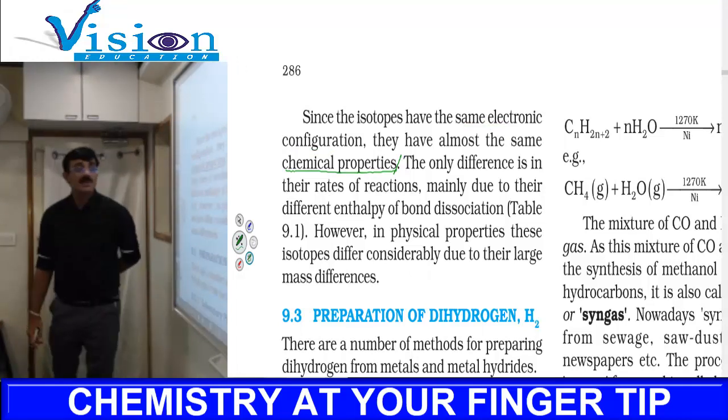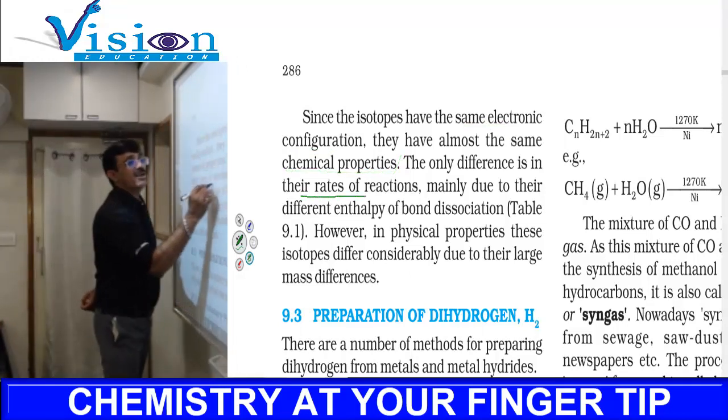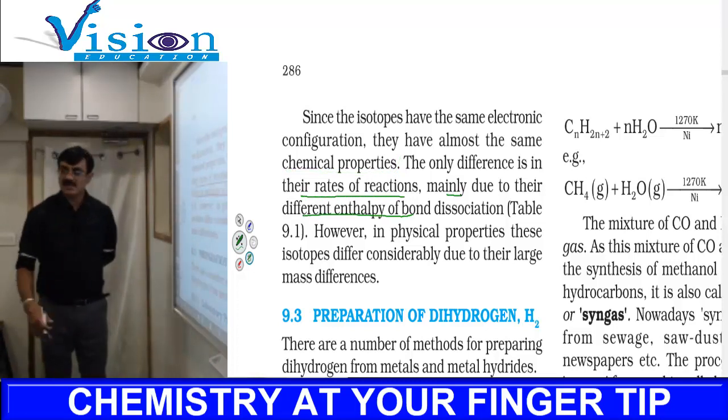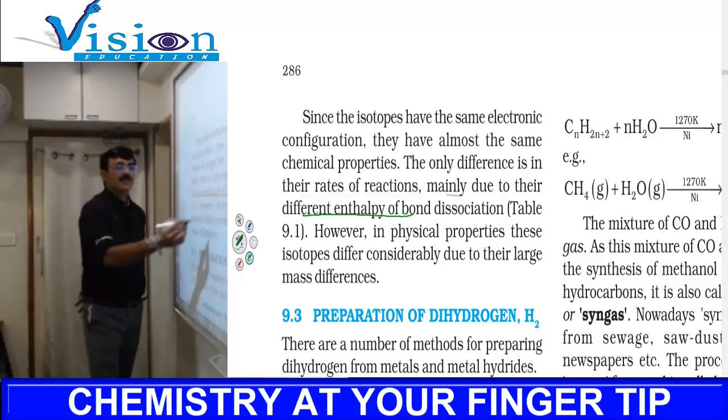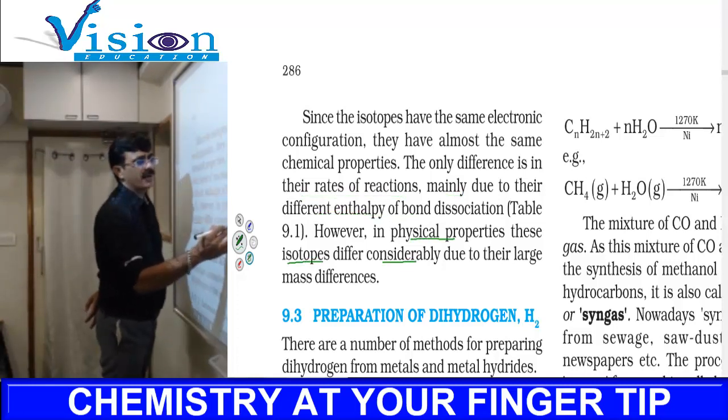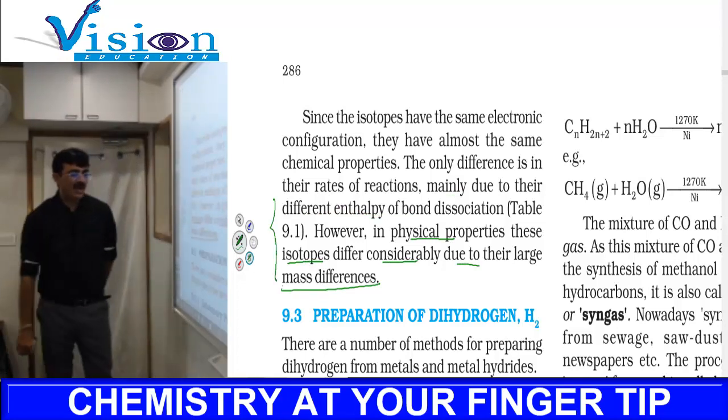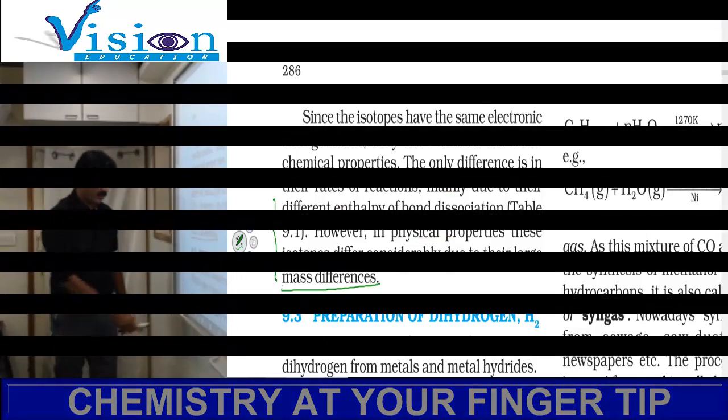The rate of reaction will be different because of the different masses and different bond dissociation energies. In physical properties, these isotopes differ considerably due to the large mass differences among the isotopes of hydrogen.